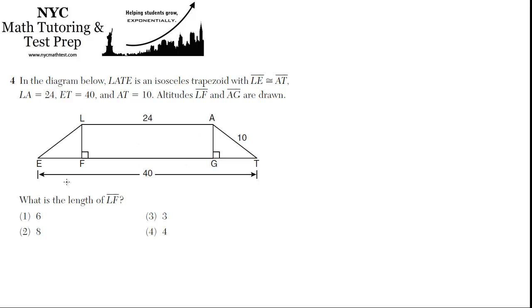So the whole thing is an isosceles trapezoid. They're telling us that LE is congruent to AT, so these are both 10, and LA is 24, they've labeled that for us, that's the top, and ET is 40, they've labeled that as well, that's the bottom, and altitudes LF and AG have been drawn. That's what they want to know, they want to know what's the length of LF, so this is the length that we're interested in.